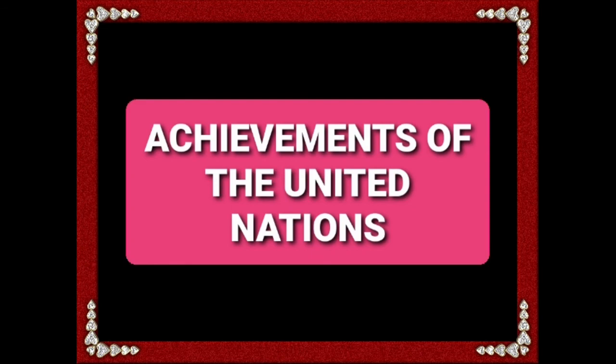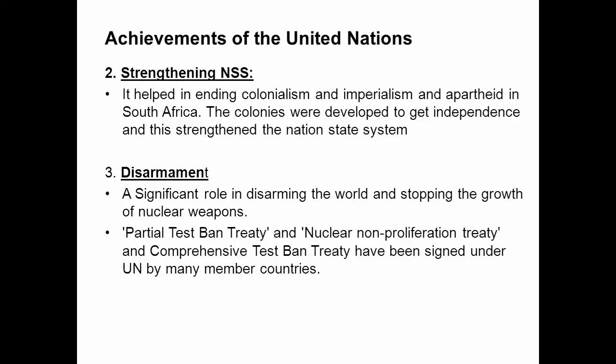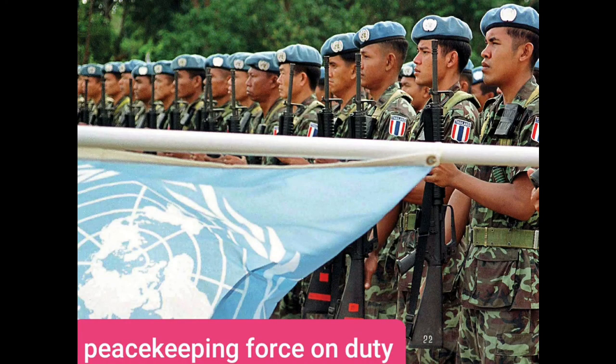Achievements of the United Nations: The United Nations has been largely successful in maintaining peace in the world. It has solved several international disputes and prevented conflicts from growing into major wars. The United Nations also undertook peacekeeping operations in Congo. The UN favours disarmament and is making efforts to prevent the misuse of destructive weapons.